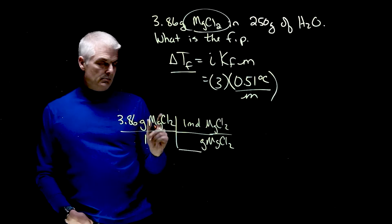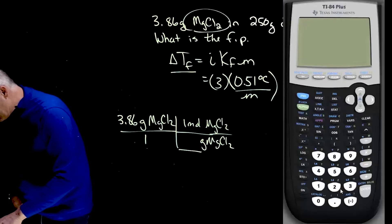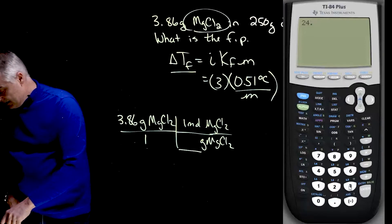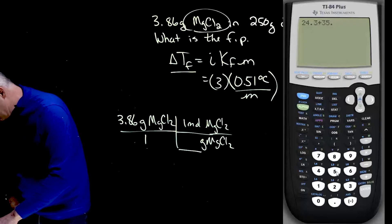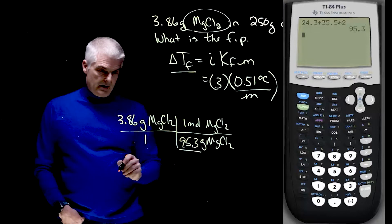Now I want to convert that to moles. So grams of MgCl2 in one mole of MgCl2. Where am I going to get this number? From the molar mass on the periodic table. So magnesium weighs 24, turn the calculator on, 24.3 plus 2 times 35.5, that's the molar mass of chlorine.